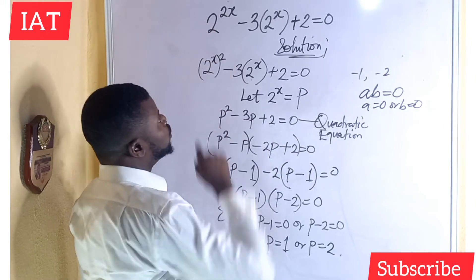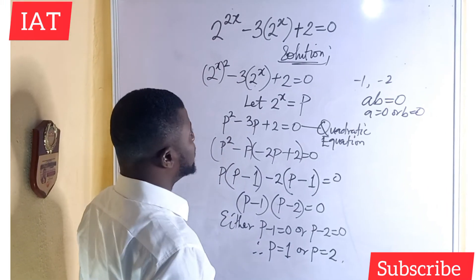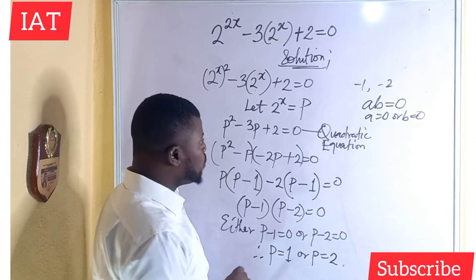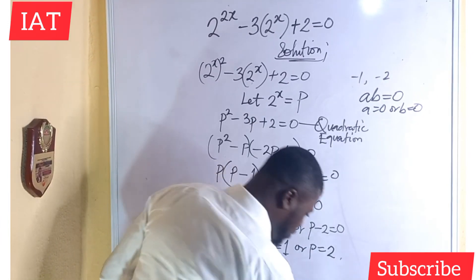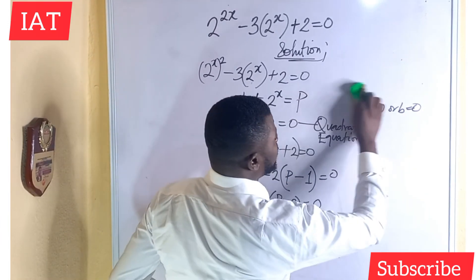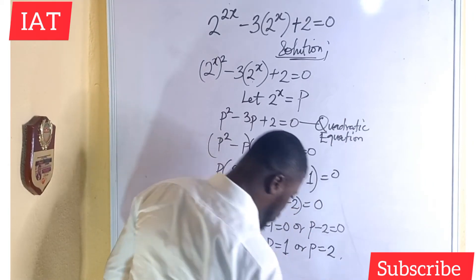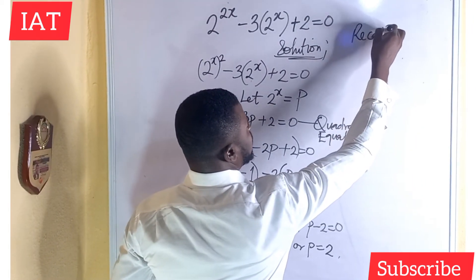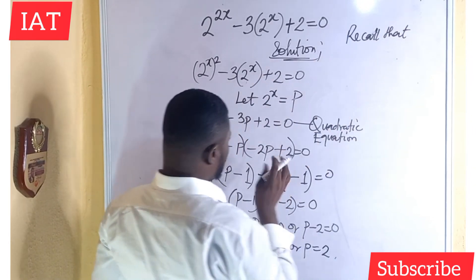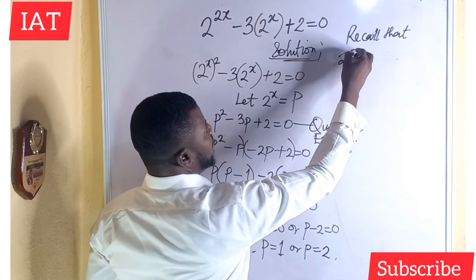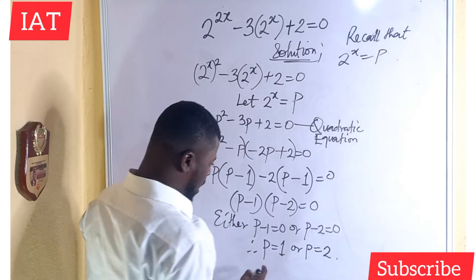but then, the question says we should find the value of x and not p. So, because we've made an assumption there, we have to retract that point. What do we need to do at that point is to recall that, we have 2 to the power of x equal to p. And then,